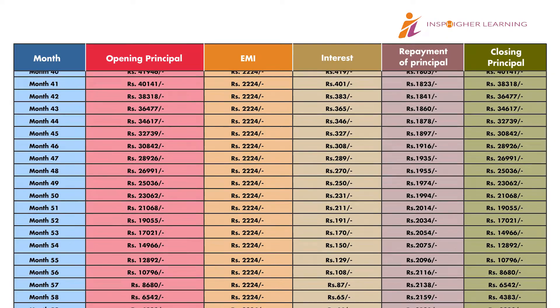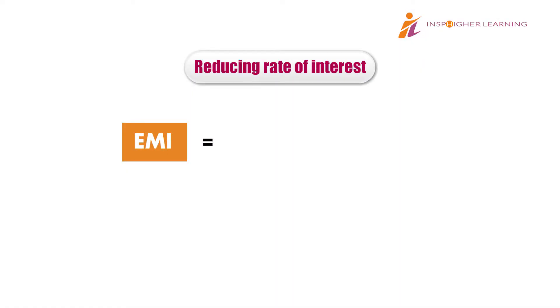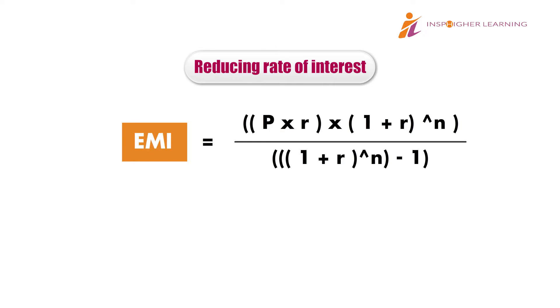This table that we just worked upon is the amortization schedule or repayment schedule. Now the unanswered question is: how did we calculate the EMI? Given the loan amount, interest and tenor, EMI is calculated using a mathematical formula: P multiplied by small r, multiplied by (1 + small r) raised to the power of small n, divided by (1 + small r) to the power of small n minus 1.